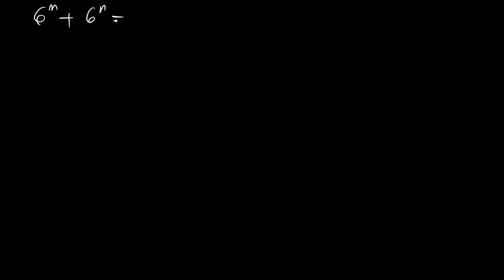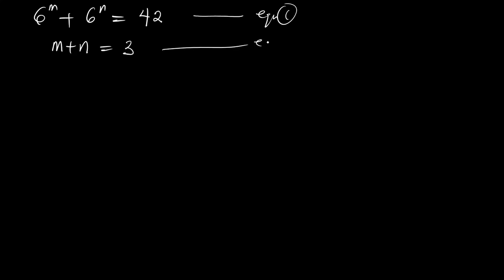We have the first equation: 6 to the power m plus 6 to the power n equal to 42. Let's call this equation 1. And we have m plus n equal to 3. Let's call this equation 2.